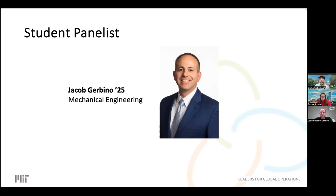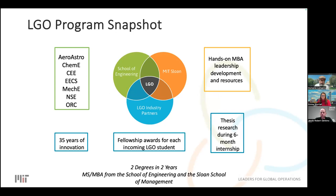The LGO program is a two-year dual degree program. You become a full student of the MIT Sloan MBA program, a full student of the engineering department you choose to get your master's in, and also part of the LGO program. We have our own LGO staff for student services, career network, financing, and action learning. You'll be part of the MIT community, your own LGO community, and the engineering and business communities as well.